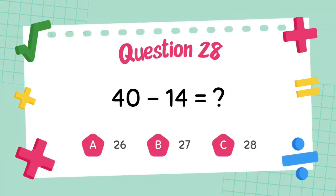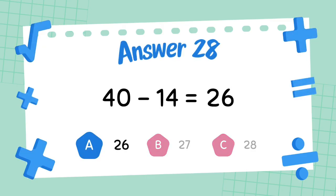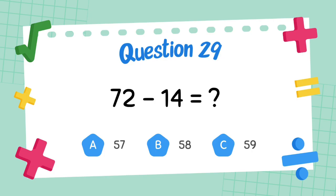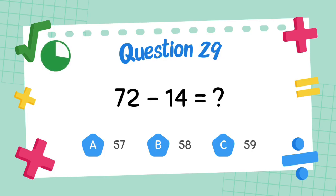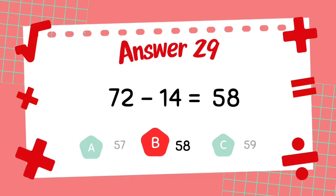What is 40 minus 14? The answer is 36. What is 32 minus 14? The answer is 58.